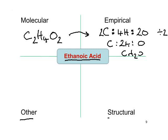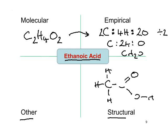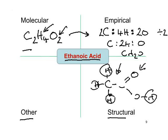Then there's the structural formula, which actually indicates the way in which the atoms are joined together. In the case of ethanoic acid, we have two carbons bonded together. The left carbon is bonded to three hydrogens; there's a double bond from the right carbon to one oxygen, then a single bond to another oxygen, then to a hydrogen. The structural formula shows how the atoms are bonded to one another, and you can count two carbons, four hydrogens and two oxygens.